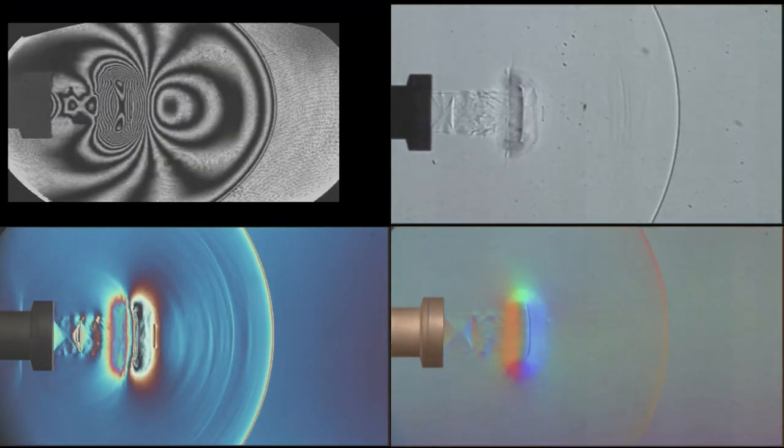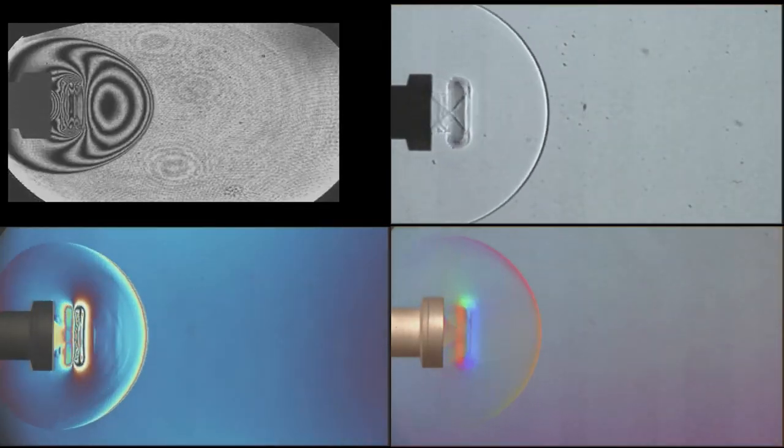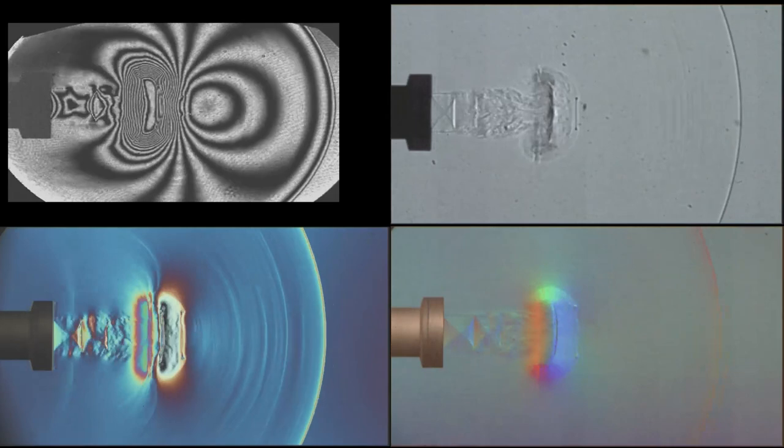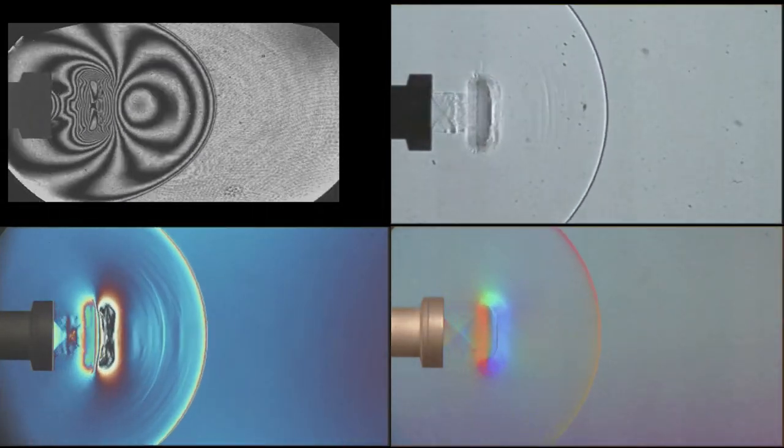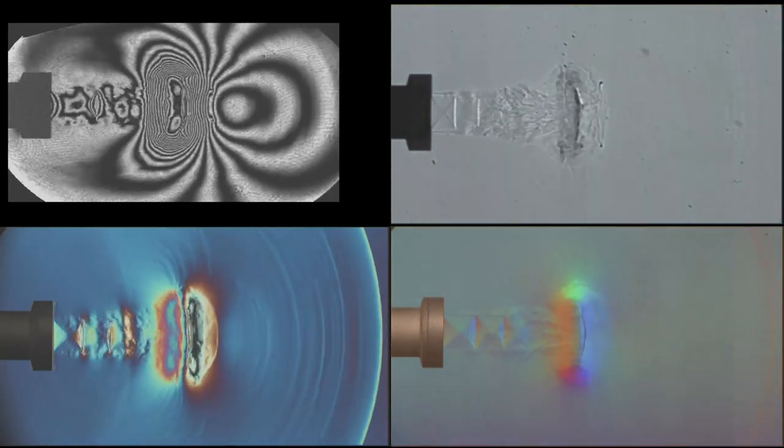The setup we have here in the supersonic lab has evolved over many years into what it is right now, and it allows us to change between different methods without too much change of any hardware. We can also use two methods or possibly three at the same time to visualize the same flow.